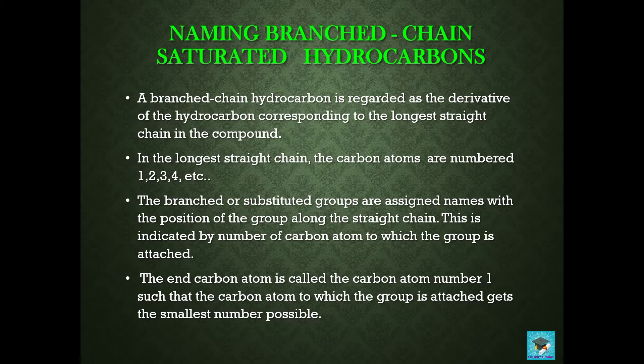A branched chain hydrocarbon is regarded as the derivative of the hydrocarbon corresponding to the largest straight chain in the compound. In the longest straight chain the carbon atoms are numbered 1, 2, 3, 4, etc. The branched or substituted groups are assigned names with the position of the group along the straight chain, indicated by the number of the carbon atom to which the group is attached. The end carbon atom is called carbon atom number one, such that the carbon atom to which the group is attached gets the smallest number possible.